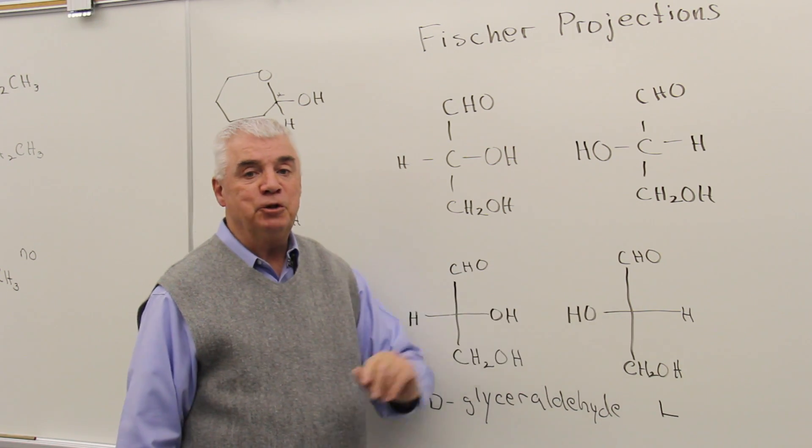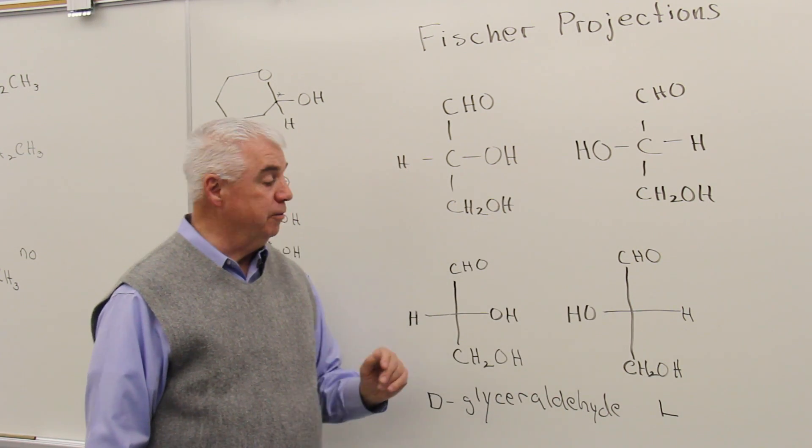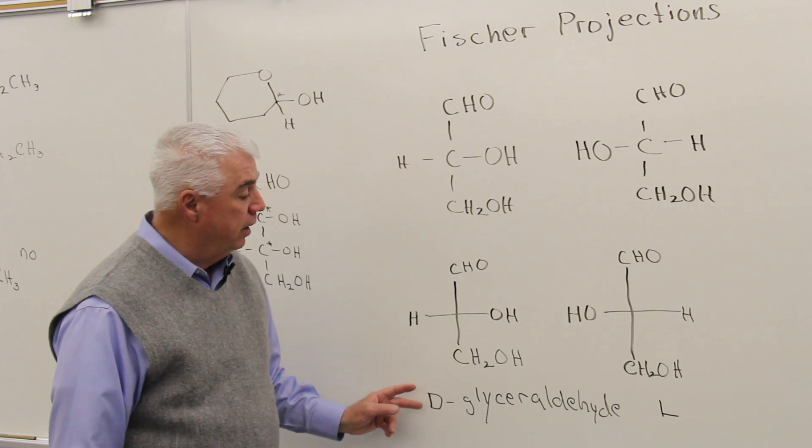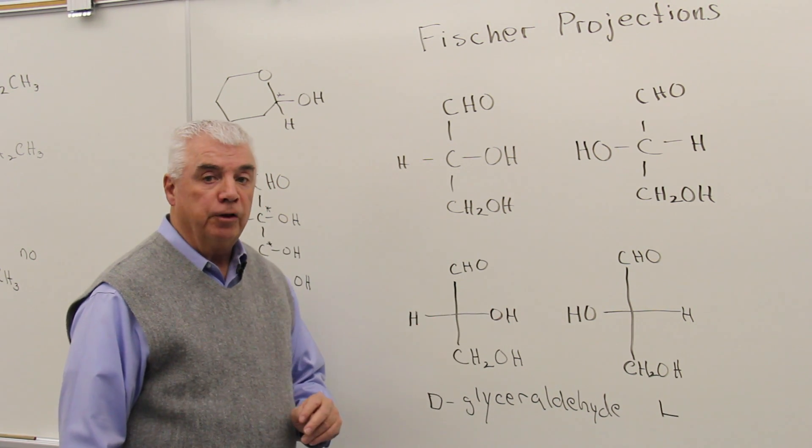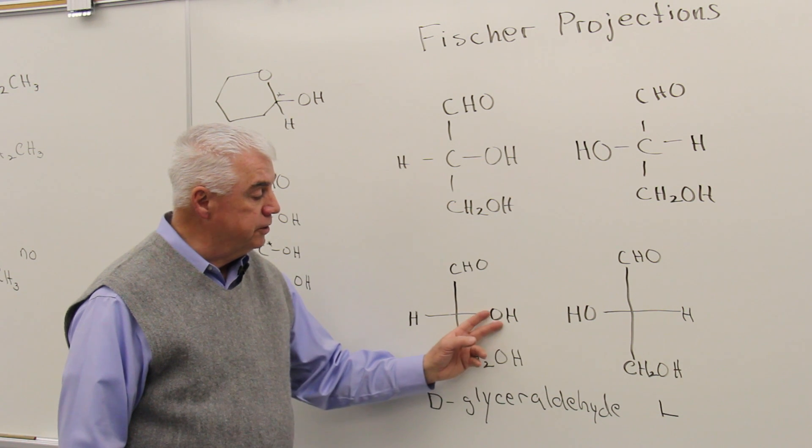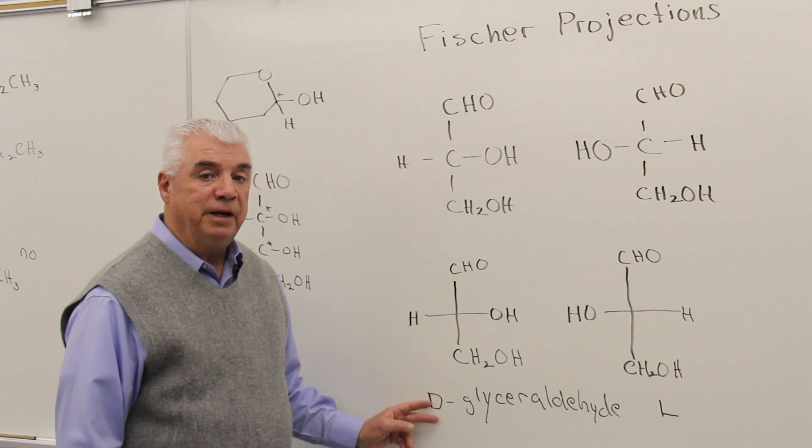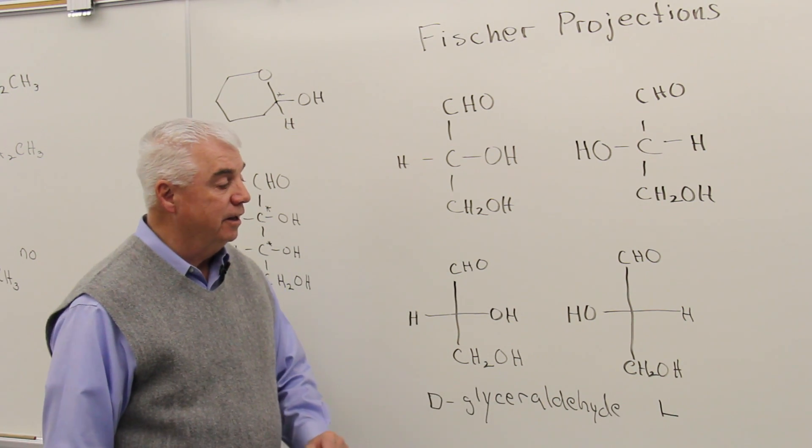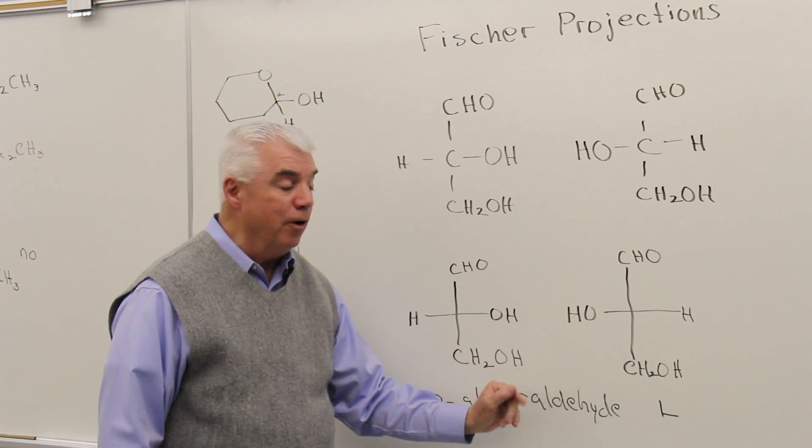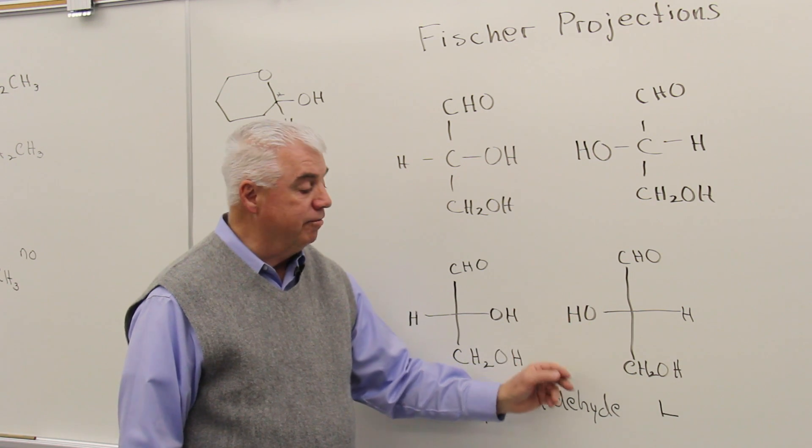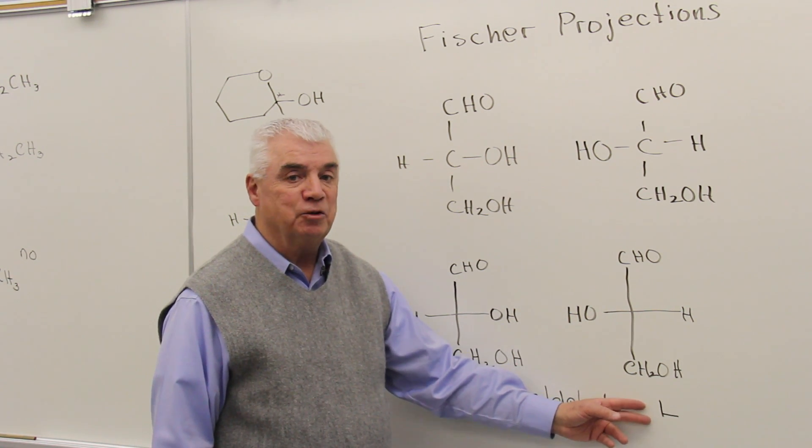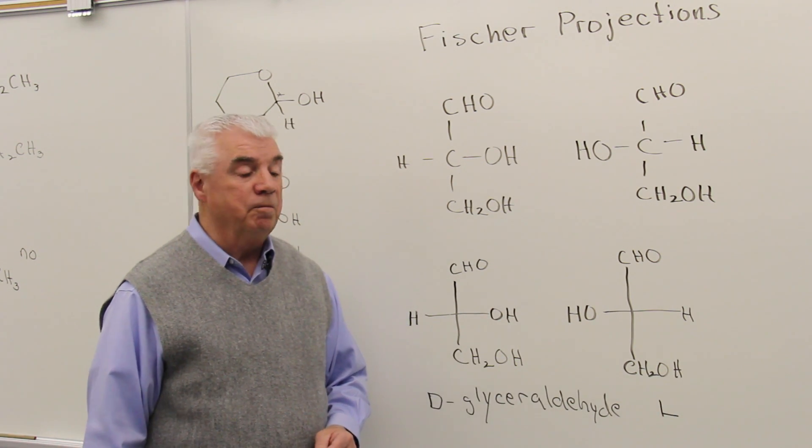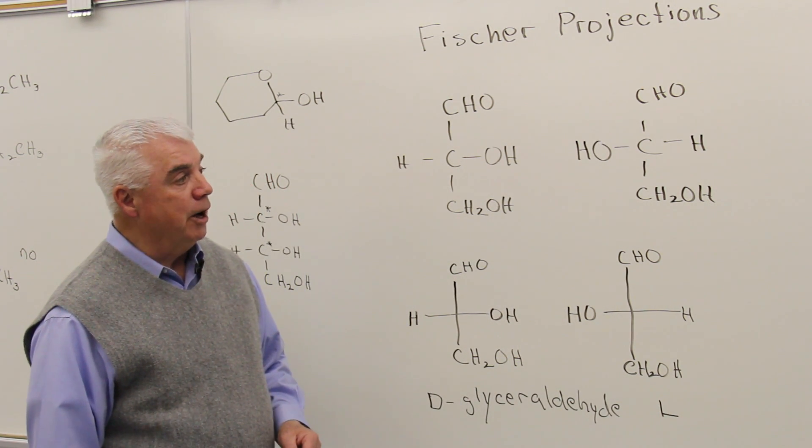And then because we have two isomers, it's nice if we can differentiate those so that we know which one we're talking about. If the OH on the chiral carbon is pointing to the right, it's called D. So this would be, it's a small capital D, D-glyceraldehyde. Over here, the OH is pointing toward the mirror. It's pointing toward the left. This is L-glyceraldehyde. And the way I remember this is that left begins with L, and that helps me.